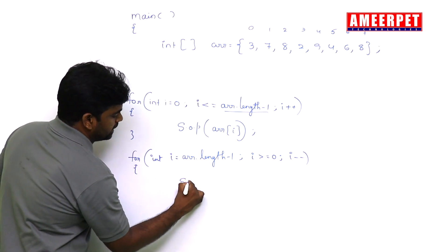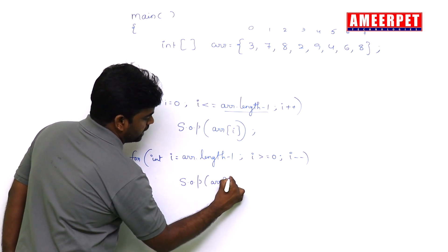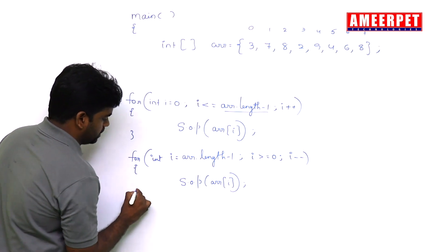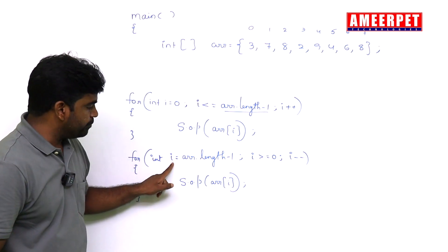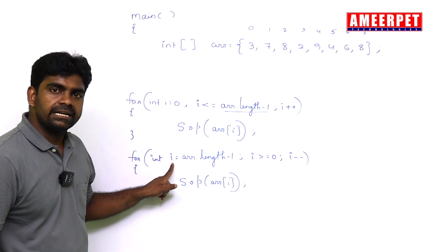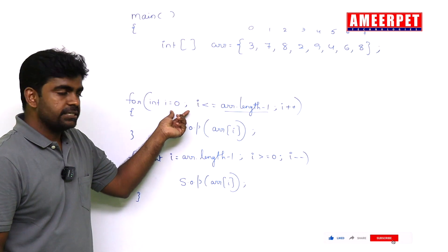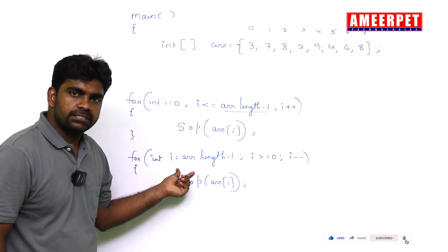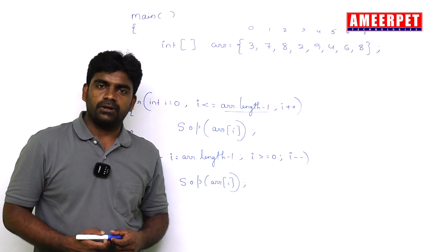Inside that, printing the same: System.out.println arr[i]. So this is how we are printing array elements in reverse order. It's the simple way. This is in forward direction and this is in backward direction elements printing. Hope you understood. Thank you all.